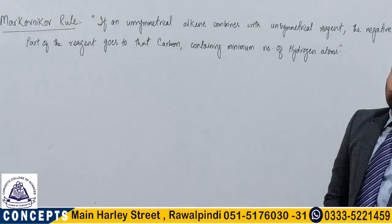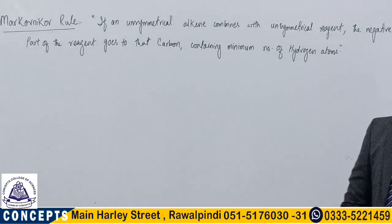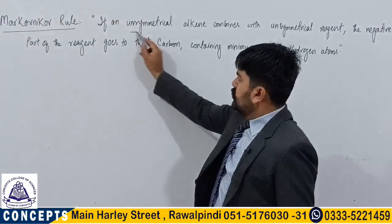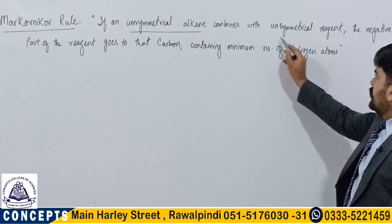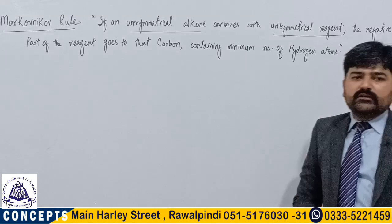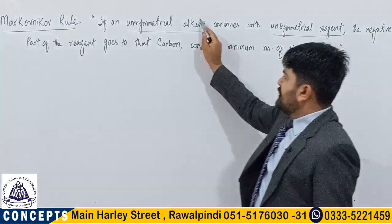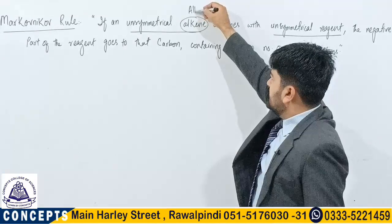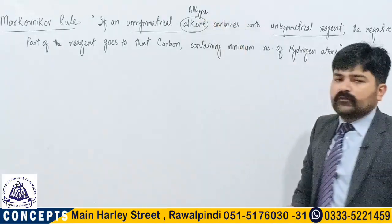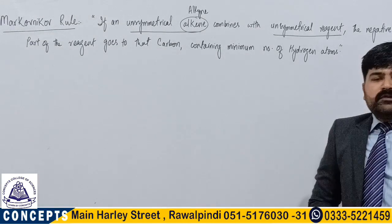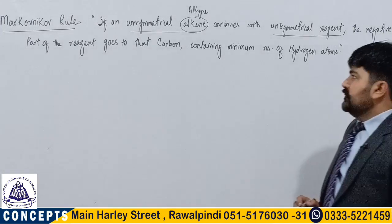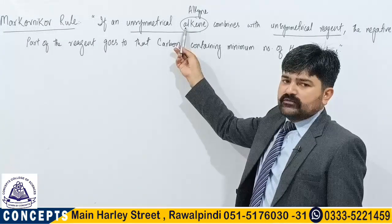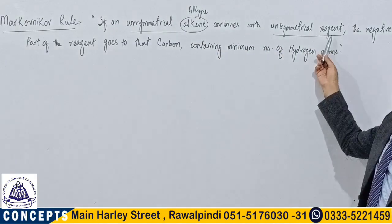So this is our main definition. First we have to sort out two terms: one is unsymmetrical alkene and the other is unsymmetrical reagent. The alkene is not specific — we can also write alkyne in the definition. Mainly the idea is to deliver you a method where some unsymmetrical compound reacts with an unsymmetrical reagent.